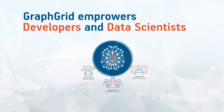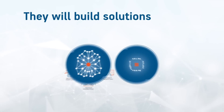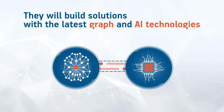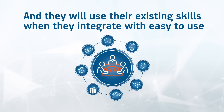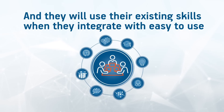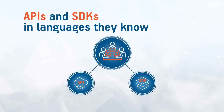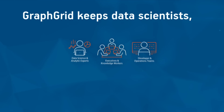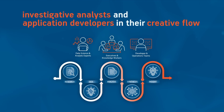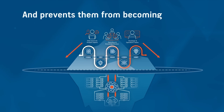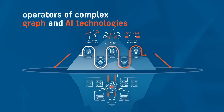GraphGrid empowers developers and data scientists already on your team. They will build solutions with the latest graph and AI technologies, and they will use their existing skills when they integrate with easy-to-use APIs and SDKs in languages they know. GraphGrid keeps data scientists, investigative analysts, and application developers in their creative flow, and prevents them from becoming operators of complex graph and AI technologies.